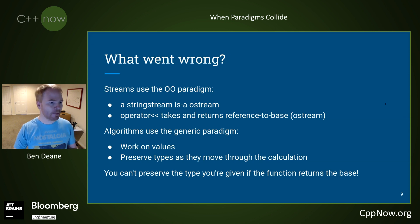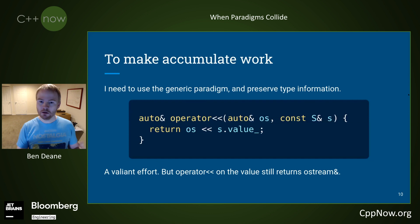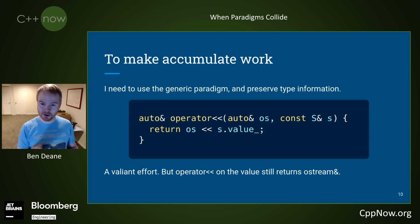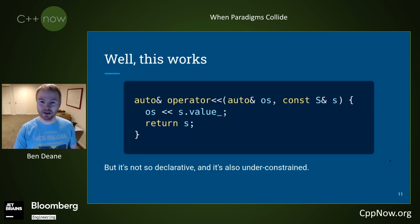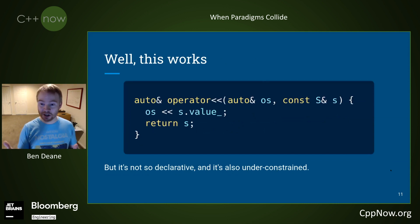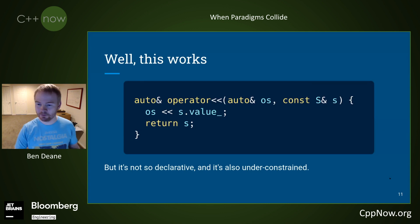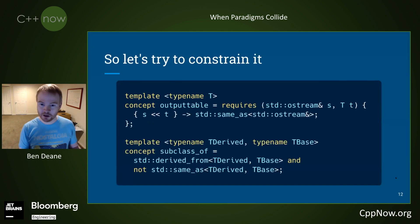So what can we do? We need to preserve type information. Hacking around, I try making it take auto and return auto ref — a good effort, but returning that expression is still going to return an ostream ref. This works when ostream OS comes in as a stringstream ref and we return the right thing, but it's clearly under-constrained. So I try to constrain it with concepts, naturally.